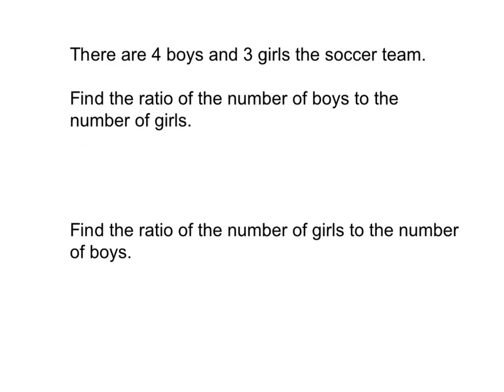So in this case, we're talking about there being four boys. We'll underline important information. There are four boys and three girls on the soccer team. So I know there are four boys and three girls. That's a quantity. I have two different quantities there. My question, my task, is to find what? The ratio.